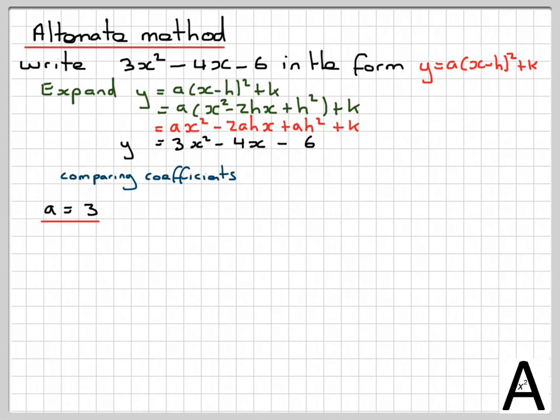So, straight away we can say that a is 3, and then we can say that minus 2ah is equal to minus 4. So we'll get rid of the minus signs and put a is 3 in, because we already know that a is 3. So that's going to give 6h is equal to 4. h is 4 over 6, which is 2 over 3.